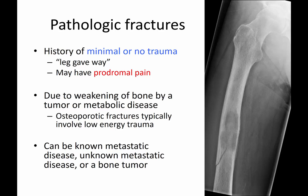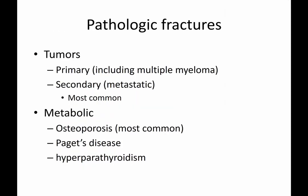Pathologic fractures can be due to weakening of bone by a tumor or metabolic disease. While some refer to osteoporotic fractures as pathologic, most occur with low-energy trauma unless osteoporosis is very severe. On this X-ray you can see a lesion causing thinning of the medial cortex and scalloping of the lateral cortex, with a resulting fracture — this could be from known or unknown metastatic disease, or a primary bone tumor. Primary bone tumors include Ewing's sarcoma, osteosarcoma, chondrosarcoma, and multiple myeloma.